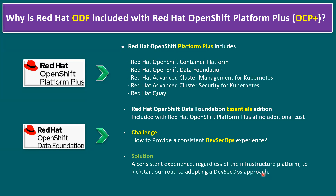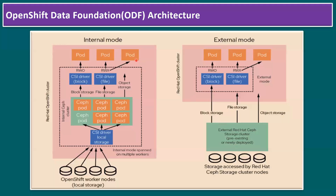Now let's understand the OpenShift Data Foundation architecture. ODF is available in two different architectures: we can deploy ODF in internal mode or external mode. Internal mode means we deploy ODF within one OpenShift cluster, utilizing our worker nodes. Within a worker node, we can add additional volumes and those volumes become part of the ODF cluster. One of the key ODF components is the Ceph cluster, which provides file storage, block storage, and object storage for our pods.